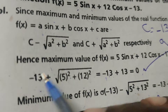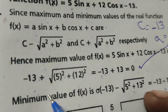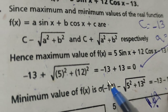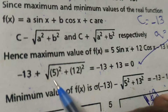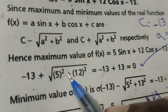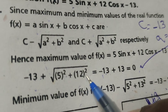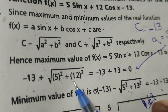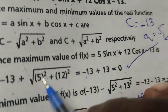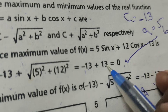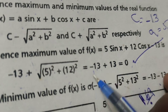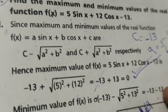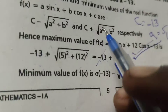So the maximum value equals minus 13 plus the square root of 5² plus 12², which is minus 13 plus the square root of 25 plus 144, equals minus 13 plus the square root of 169, equals minus 13 plus 13 equals 0. Therefore, the maximum value of f(x) is 0.